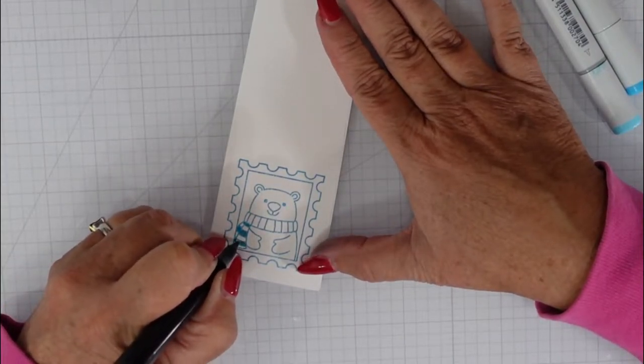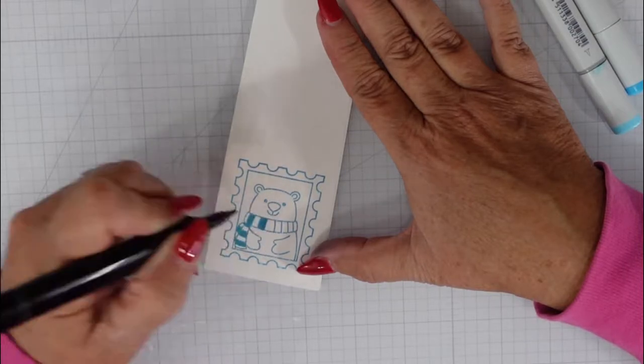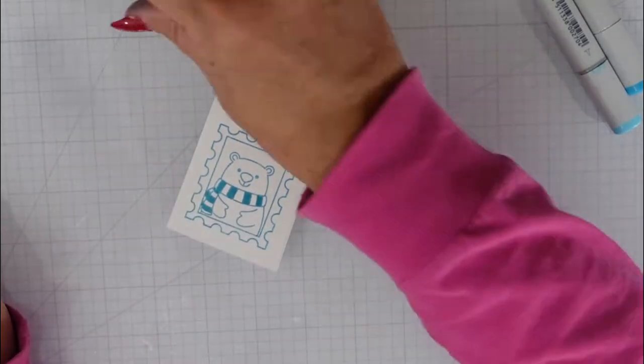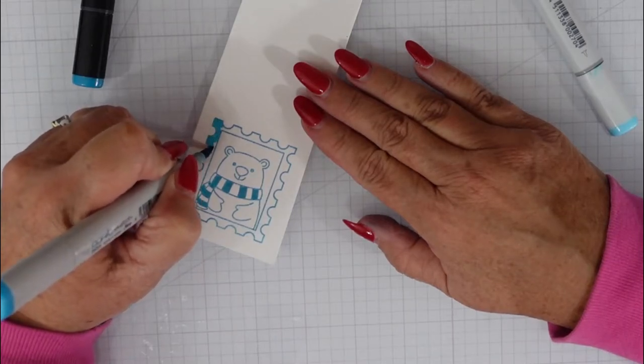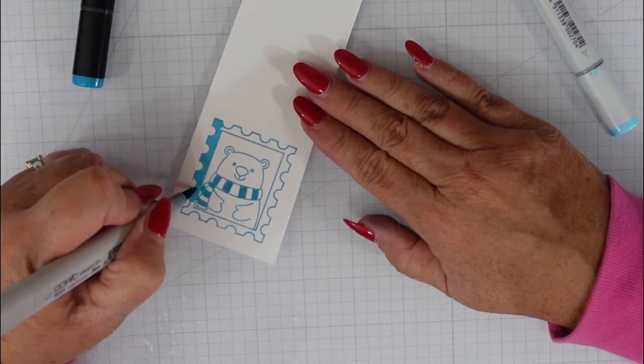And using my Copic markers, I just went with that Fiesta Blue and then added that clear embossing powder, and that protects my image from my Copic markers. I have a very simple Copic marker coloring for you today.